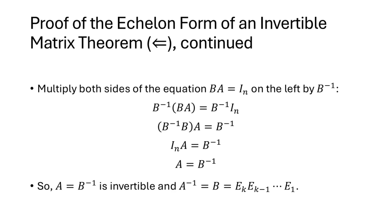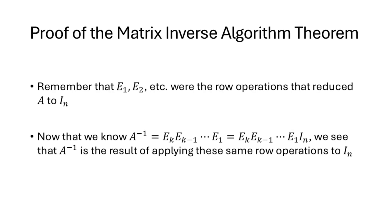This tells us exactly how to compute A inverse: it is the product of all those elementary matrices. The second theorem states that if we take those row operations that reduced A to I_n and apply them to I_n, we transform I_n into A inverse. This follows because A inverse is the product of those E's, and multiplying them by I_n — which is applying those row operations to I_n — gives A inverse.